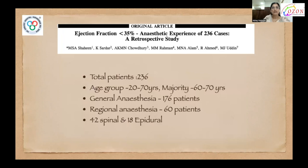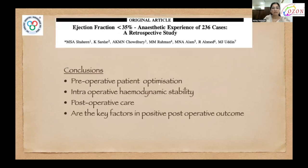Another study consisting of 236 cases with ejection fraction less than 35% — all patients were in the age group of 20 to 70 years with majority in the 60 to 70 year range. General anesthesia was administered to 176 patients while regional anesthesia was given to 60 patients, of which spinal anesthesia was given to 42 and epidural to 18. In conclusion, pre-operative patient optimization, intraoperative hemodynamic stability, and post-operative care are the key factors in positive post-operative outcome, whether general or regional anesthesia is used.